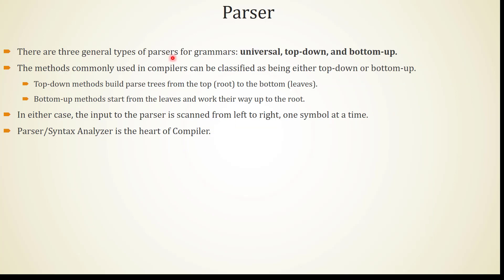There are three general types of parsers for grammars: universal parser, top-down parser, and bottom-up parser. The methods commonly used in compilers can be classified as either top-down or bottom-up. Top-down methods build parse trees from top — that is, root — to the bottom, that is, leaves. Bottom-up methods start from the leaves and work their way up to the root.